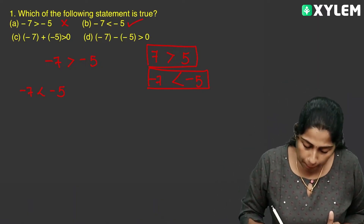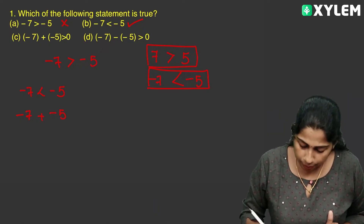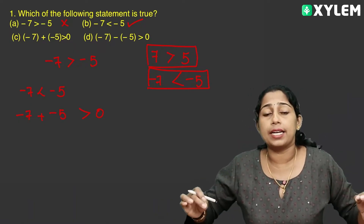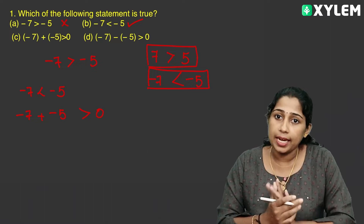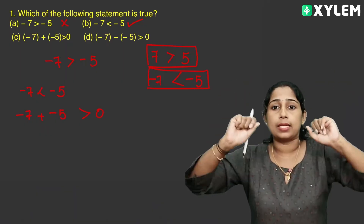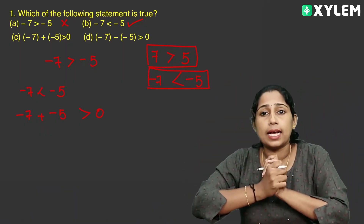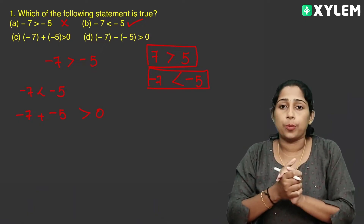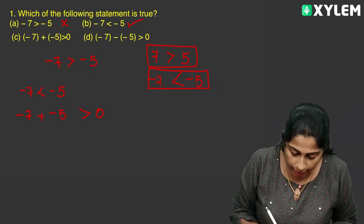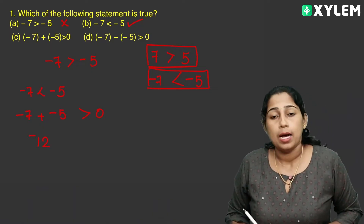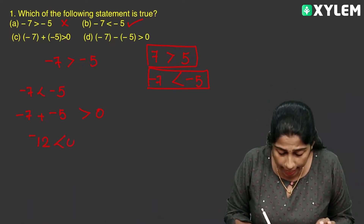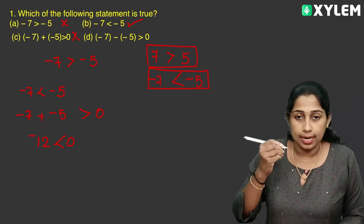Now checking: minus 7 plus minus 5, is that greater than 0? We have two numbers with minus signs, so we add and give the minus sign. Adding two negative numbers: 7 plus 5 is 12, so minus 7 plus minus 5 equals minus 12. Minus 12 is not greater than 0 — a minus value is less than 0. So that statement is false.